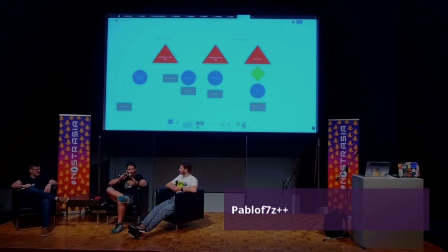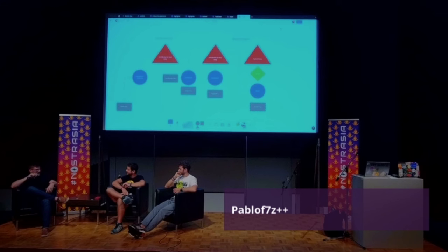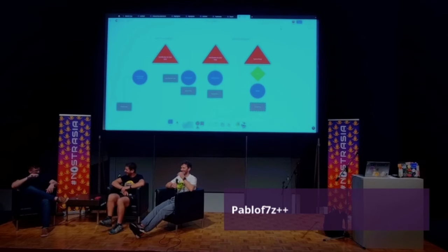I remember talking with you and G Sovereignty about this — maybe in Miami. I brought up the idea that JavaScript works by putting things on a queue and the event loop picks them up. You could do that with Nostr — relays could just be that queue. Wouldn't it be funny if someone implemented JavaScript on Nostr? Everyone laughed, but I remember seeing a glint in Pablo's eye — like he was already planning it. Pain and destruction.